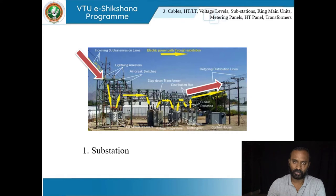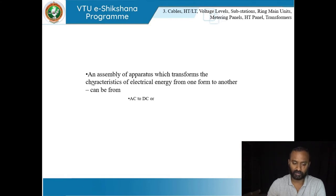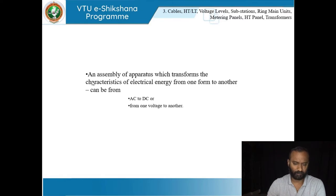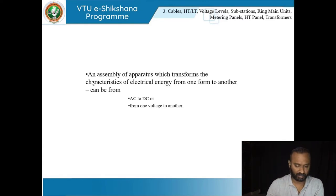This is all I would probably want you to understand at this stage. So here is a definition: an assembly of apparatus which transforms the characteristics of electrical energy from one form to another. It can be from AC to DC or from one voltage to another. This is nothing but your transformer — in this case we are talking about a substation.